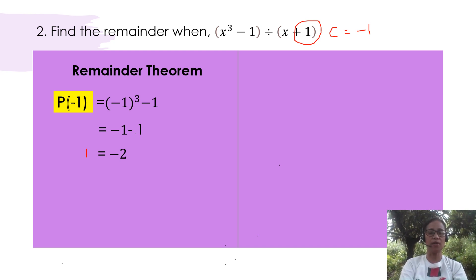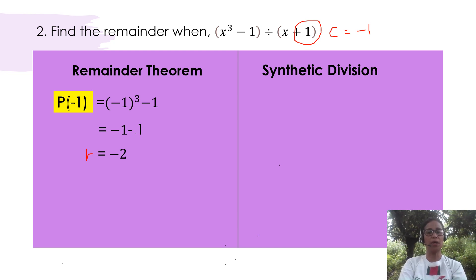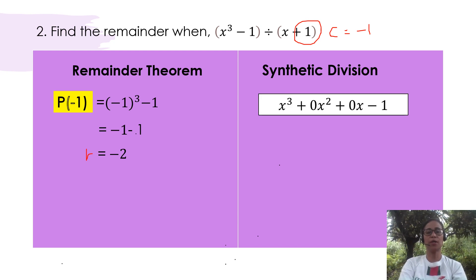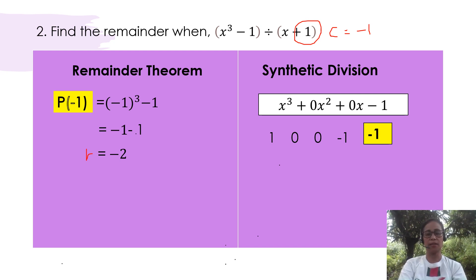Now let us check if this is correct by using synthetic division. Since x cubed minus 1, our dividend, is an incomplete polynomial — it doesn't have an x squared term or an x term — step 1 is to complete the polynomial terms. So this will become x cubed plus 0x squared plus 0x minus 1. Then we list all our coefficients in a row: 1, 0, 0, negative 1. Since we know our c is negative 1, we write that in a separate box. Now let us apply synthetic division.